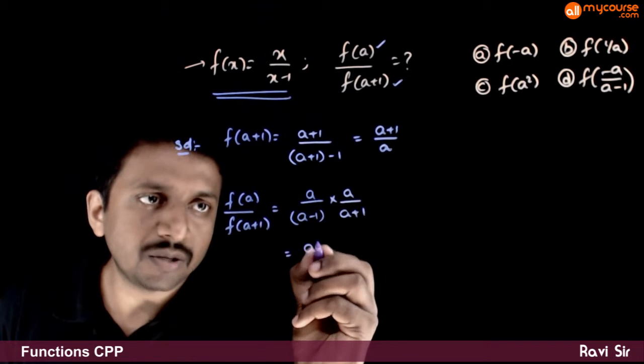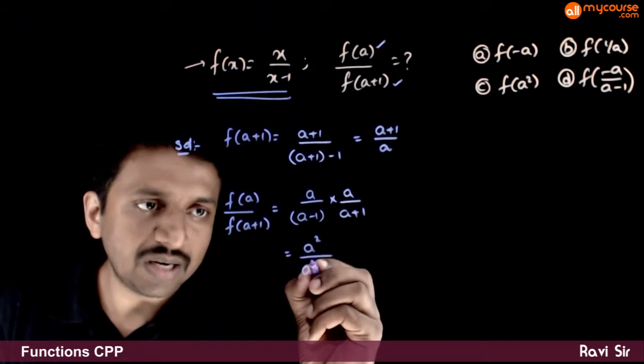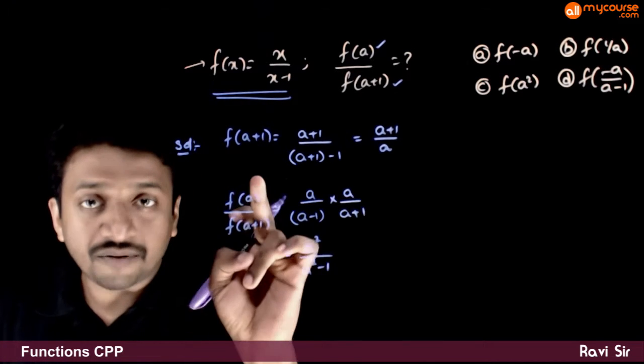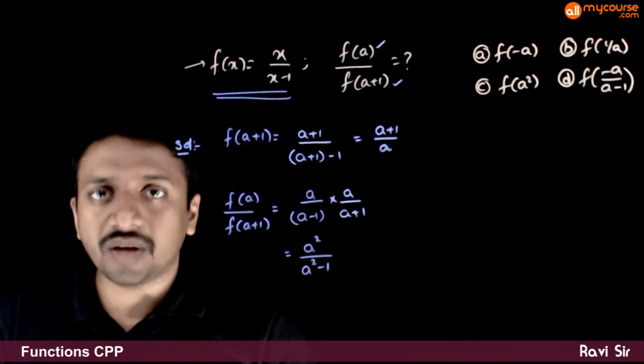As you can see, this looks like a square by a minus 1 times a plus 1 is a square minus 1. So, f of a by f of a plus 1 is a square by a square minus 1.